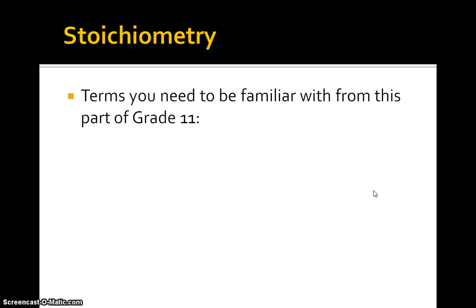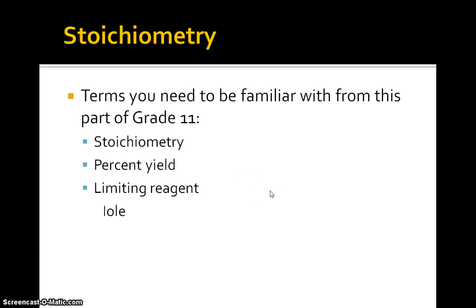These are problems you take in grade 11, but first before we do them let's talk about some terms you need to be familiar with. Of course the word stoichiometry itself, you might want to look these terms up if you don't know what they are: percent yield, limiting reagent - these tend to go hand-in-hand - the mole, and atomic mass.